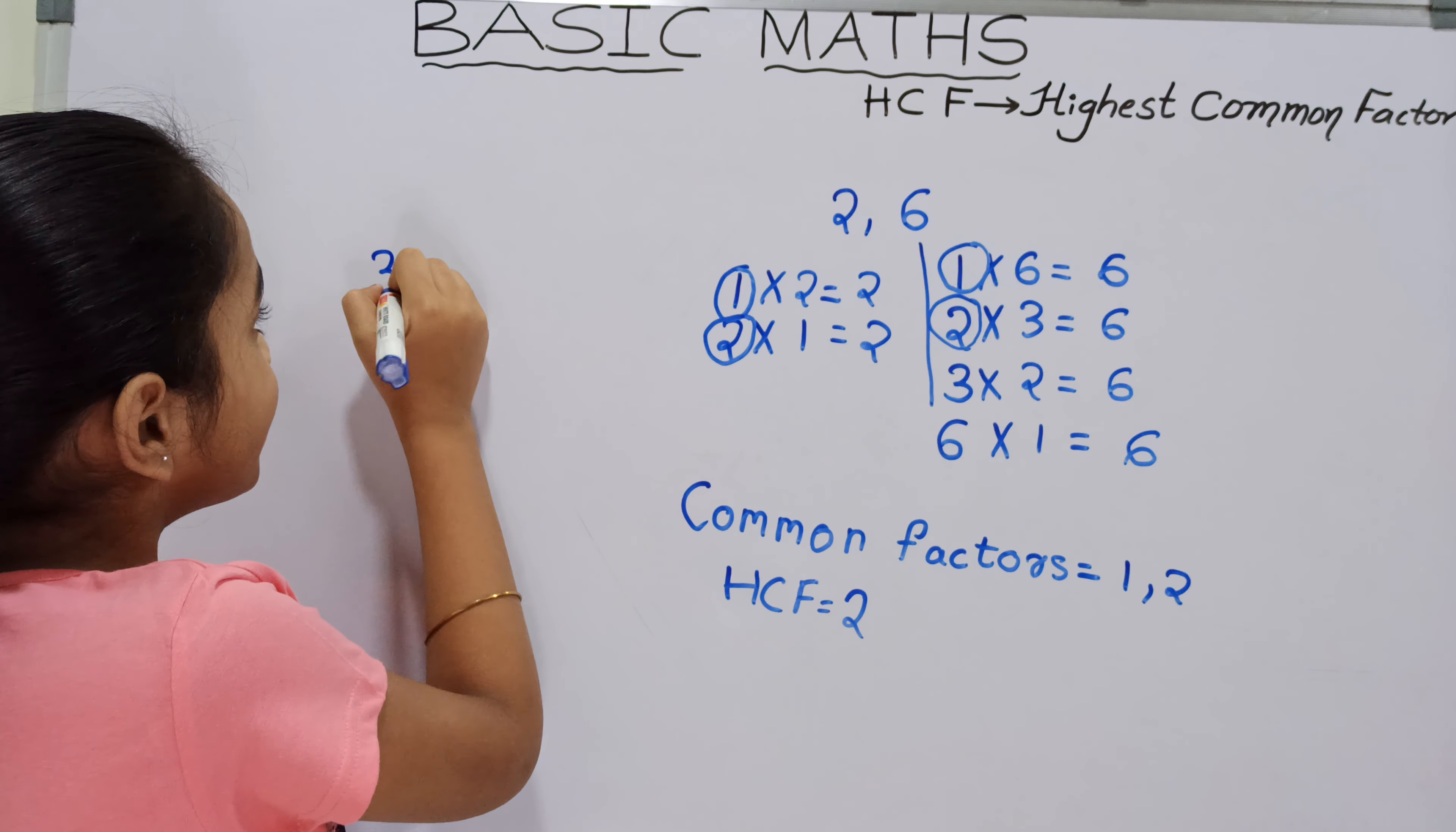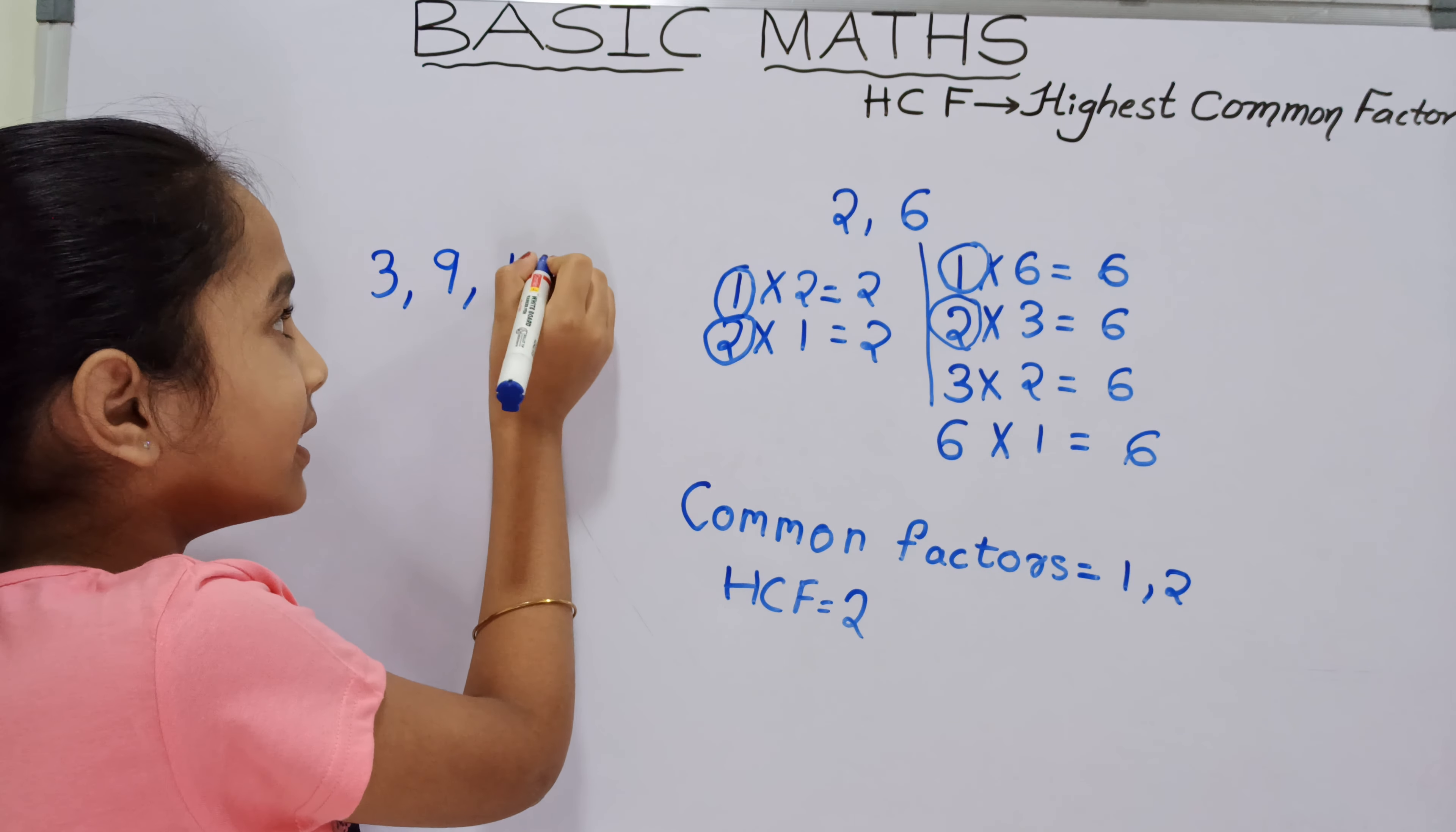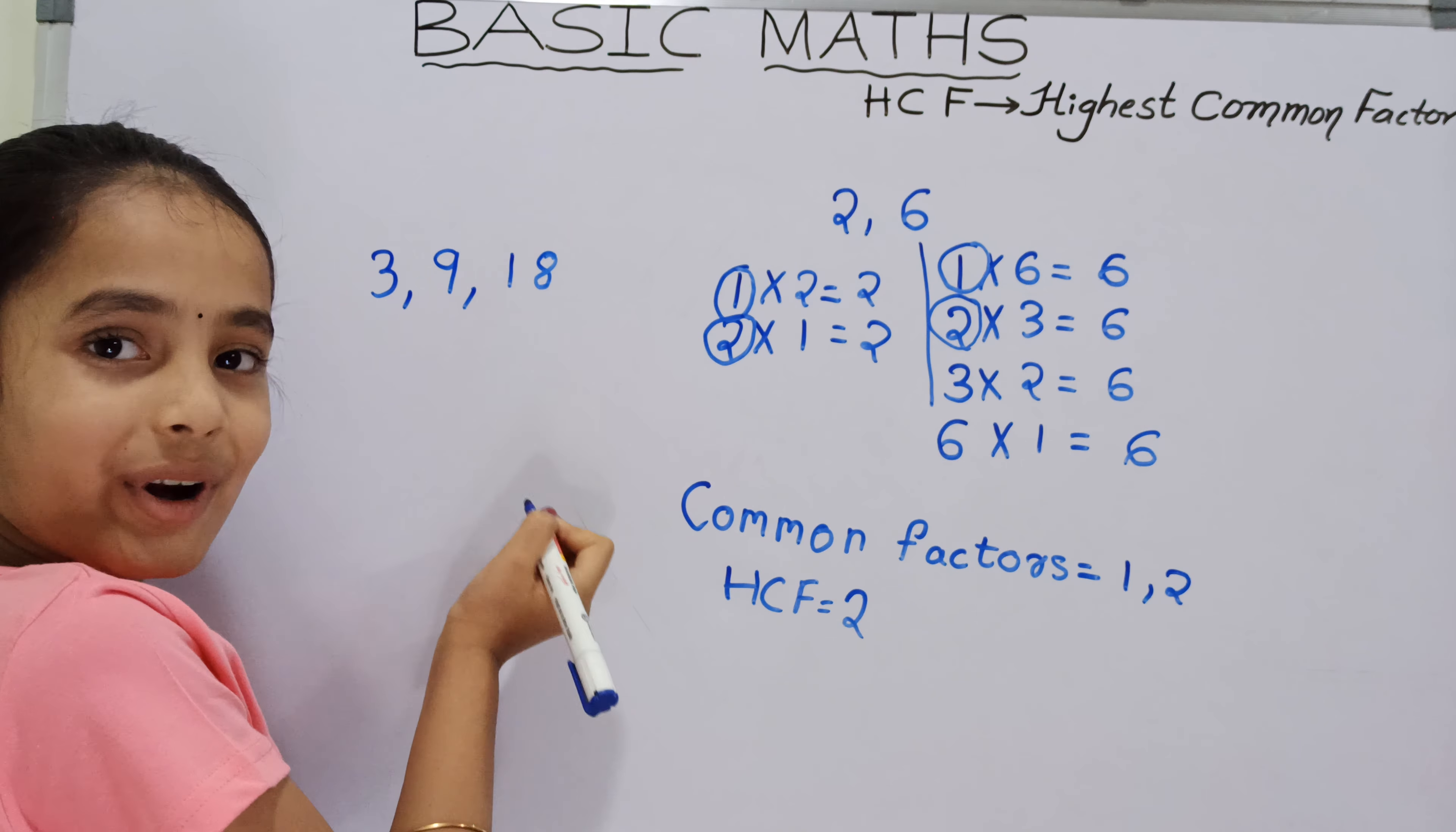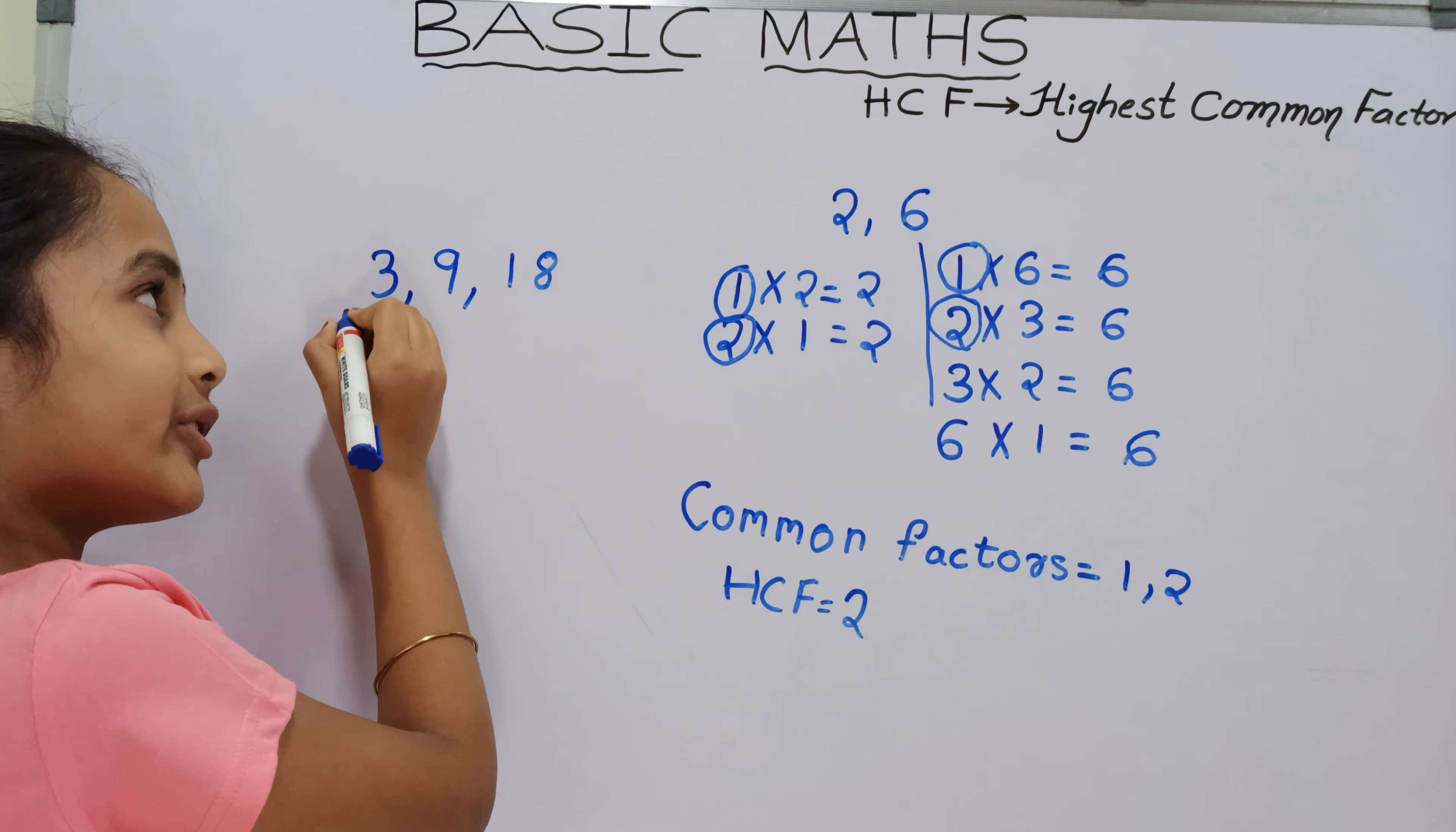For example, 3, 9 and 18. Now 9 is a multiple of 3 and 18 is a multiple of 9.